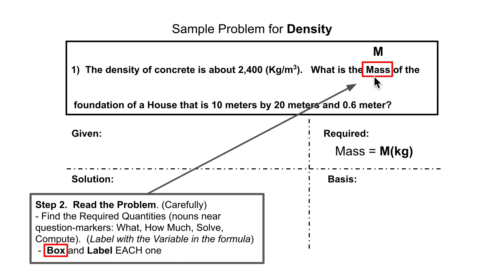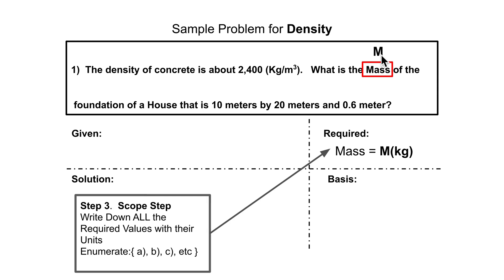The first noun following that word is usually the required quantity. I ask them to put a box on it and put the variable that's associated with that quantity. So here it is mass, and the variable is M. Then I ask them to put it in the required, not just the variable, but also the expected units so they'll know if they have to convert at the end.